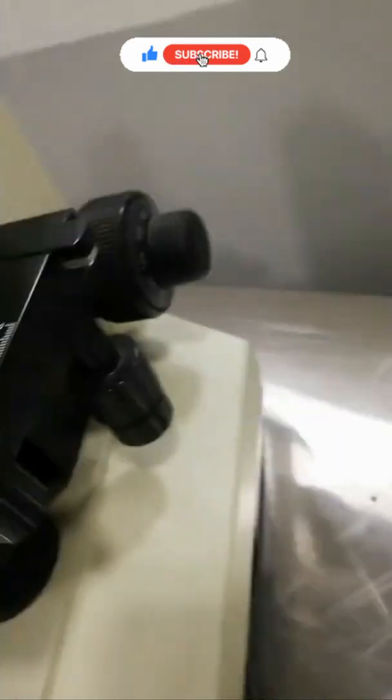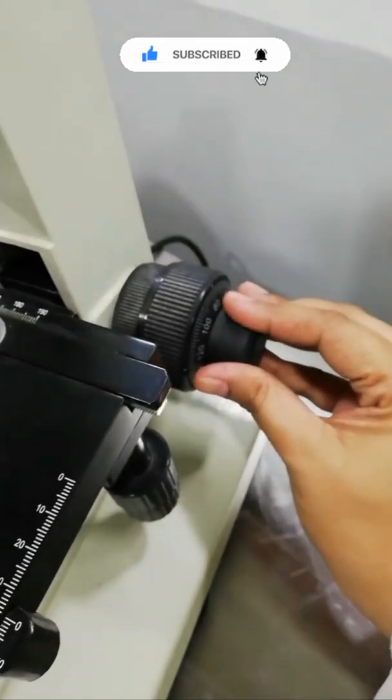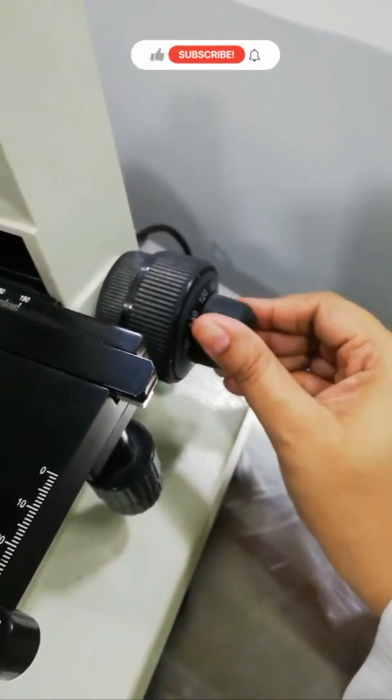On one side there are the stage moving controls. One control moves the stage back and forth, the lower control moves the stage right and left. These dials move the stage up and down to help focus on the specimen.